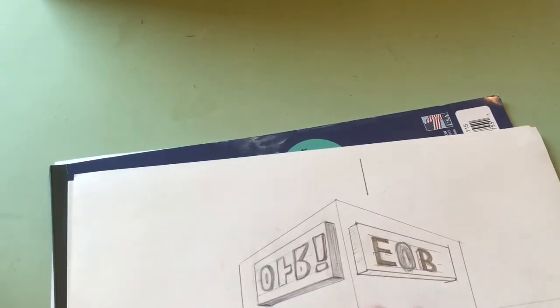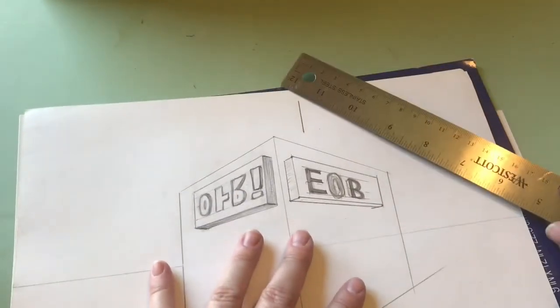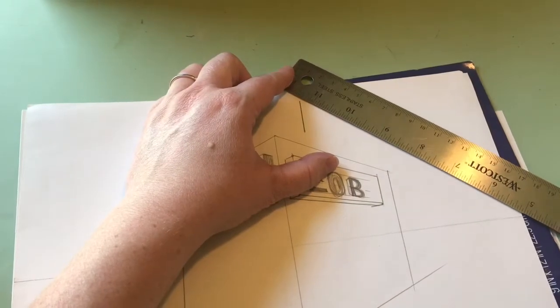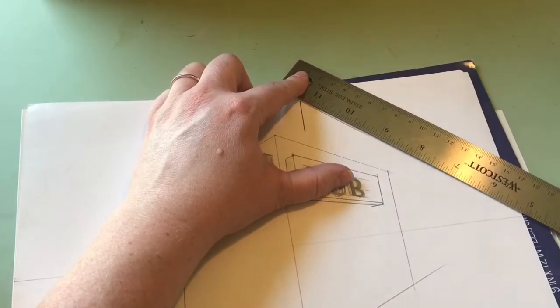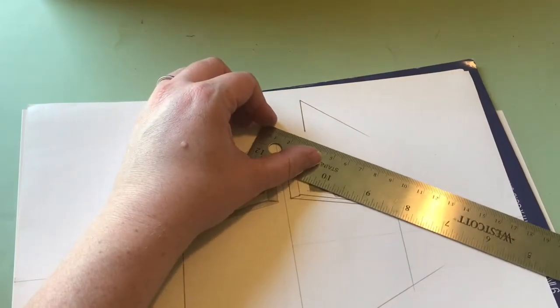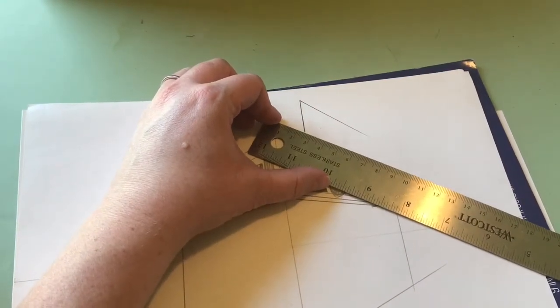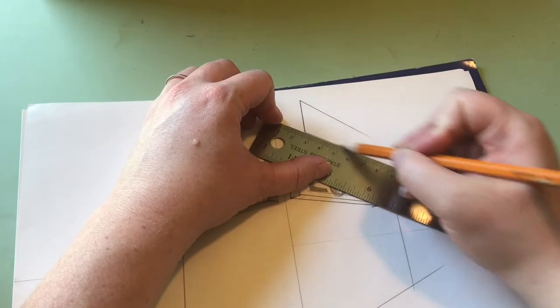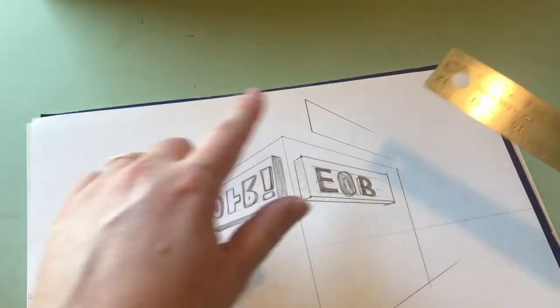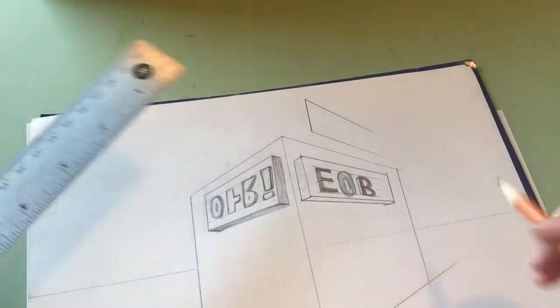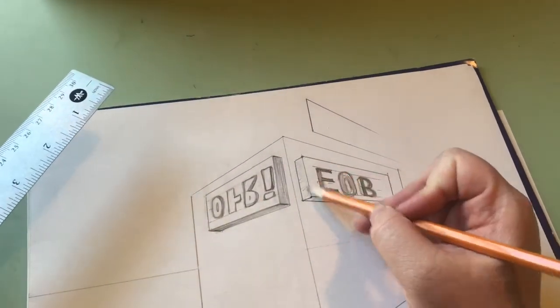And then we're going to go down to the right and down to the left. Anchor up with my vanishing point. Now when I go down to the left, I'm only going to do a little bit because I just want to do like an edge.